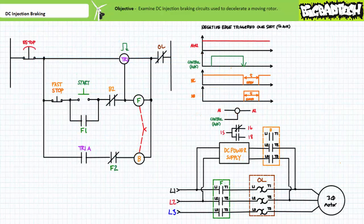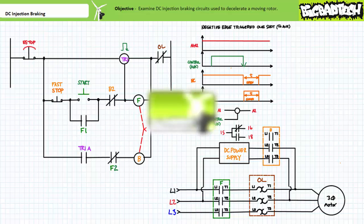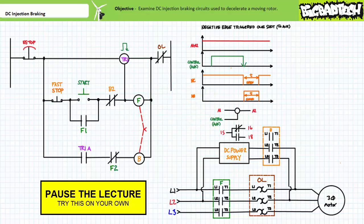Alternatively, DC injection braking could be made possible by making use of a timer relay executing the negative edge triggered one-shot function, also set for two seconds. The plugging with timers lectures available at the Big Bad Tech channel examines a similar circuit making use of a negative edge triggered one-shot. By all means, pause the lecture and see if you can walk yourself through this circuit to ensure it works as advertised.